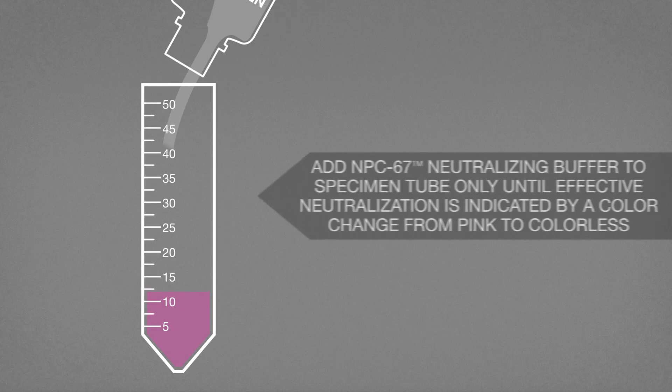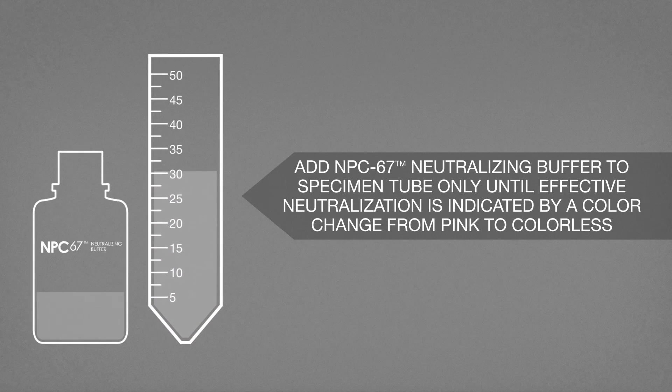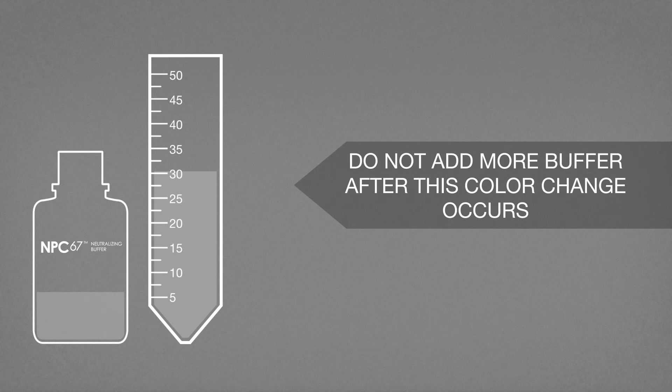Add the NPC67 neutralizing buffer to the specimen tube, but only until effective neutralization is indicated by a color change from pink to colorless. Do not add more buffer after the color change occurs.